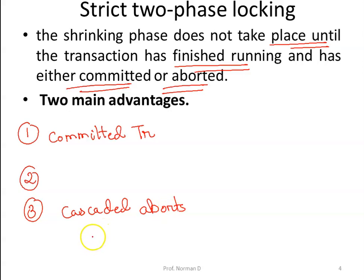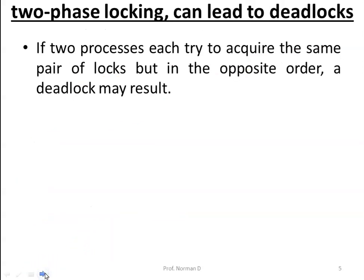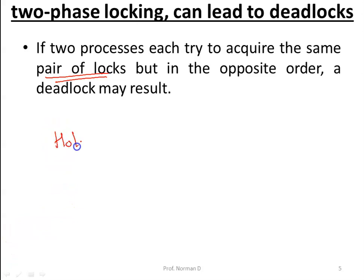Two-phase locking can lead to deadlocks. If two processes each try to acquire the same pair of locks but in the opposite order, a deadlock may occur. The usual techniques apply here, such as acquiring all locks in some canonical order to prevent hold-and-wait cycles.